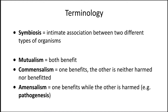A symbiosis is an intimate association between two different types of organisms. Unlike the vernacular definition, it does not imply a positive interaction. There can actually be three types of symbiotic relationships. In a mutualism, both microorganisms benefit, and this is probably the way that you think about most symbioses. In commensalism, one benefits — typically the microbe — and the other is neither harmed nor benefited.